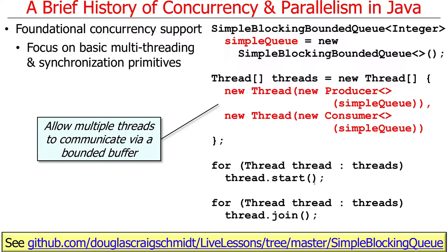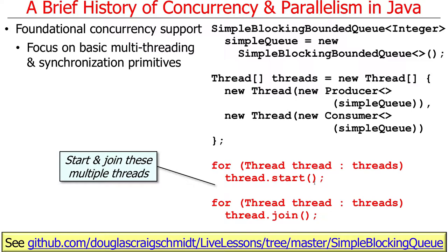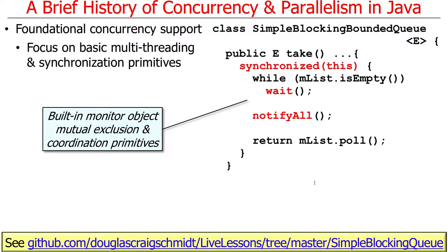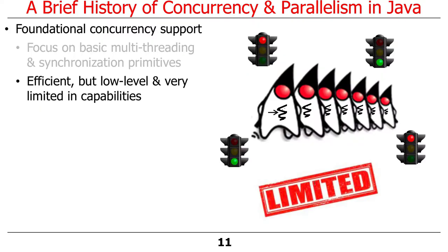We allocate two separate threads, and they communicate through this bounded buffer that's thread-safe. This code starts both threads so they're off running concurrently, and then we wait for both threads to finish. The program will complete and work correctly because we've properly synchronized it. The simple blocking bounded queue implementation uses very simple Java 1.0 synchronizer mechanisms like synchronized statements, wait, and notifyAll, to have threads take turns adding and removing things from the queue. This approach is very efficient and can be implemented efficiently at the hardware level on most chipsets.